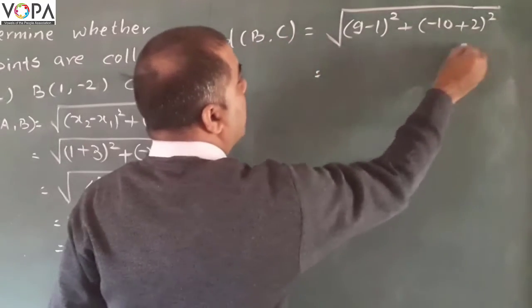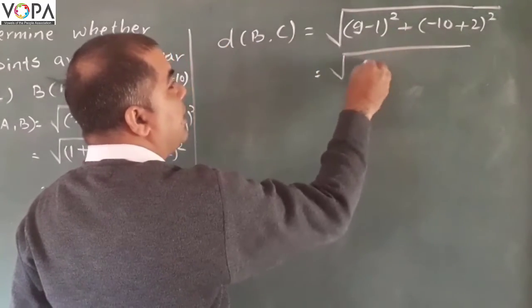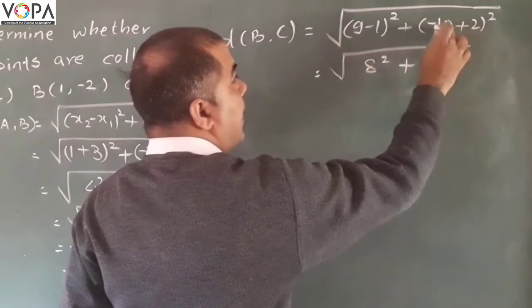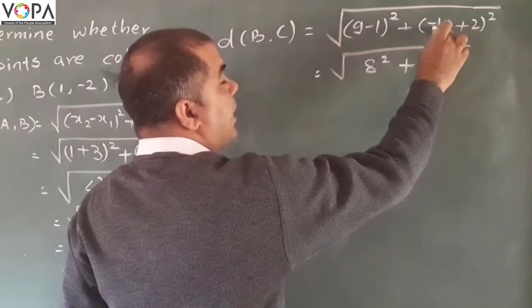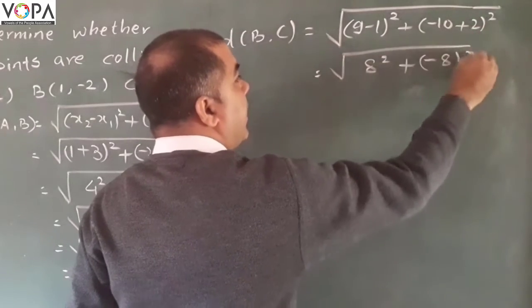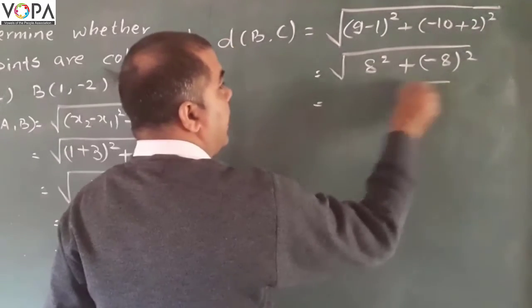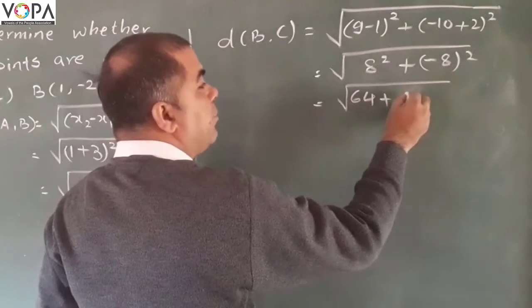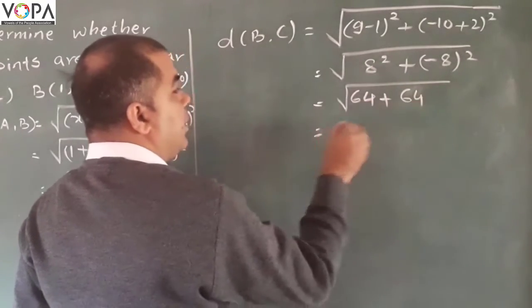Now it will be 9 minus 1 is 8 squared, plus 10 minus 10 plus 2, that will be minus 8 squared. It will be 8 squared is 64 plus negative 8 squared is also 64.